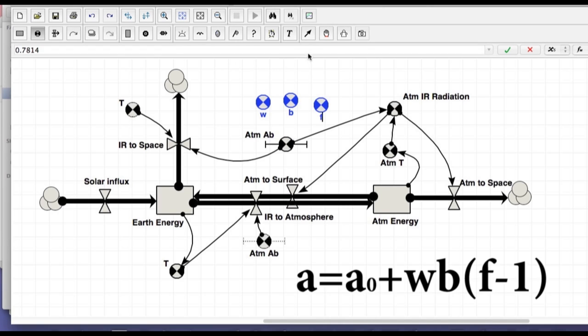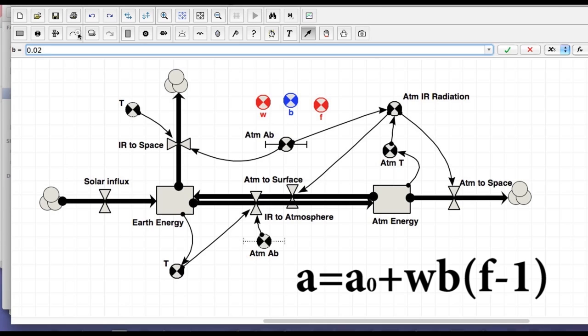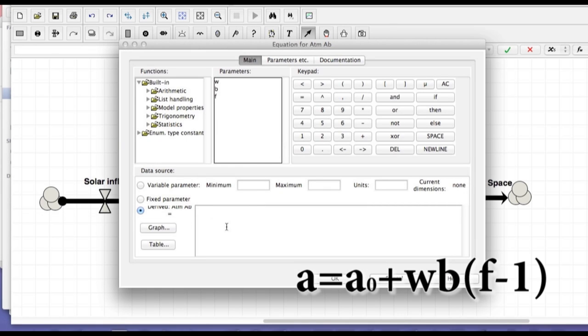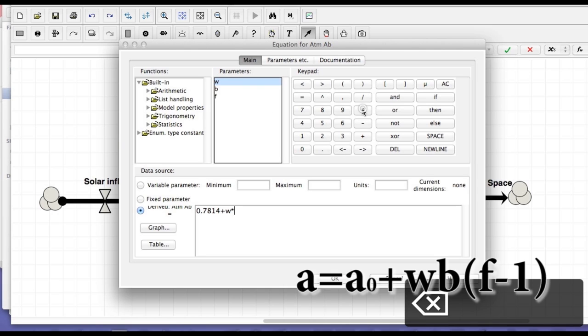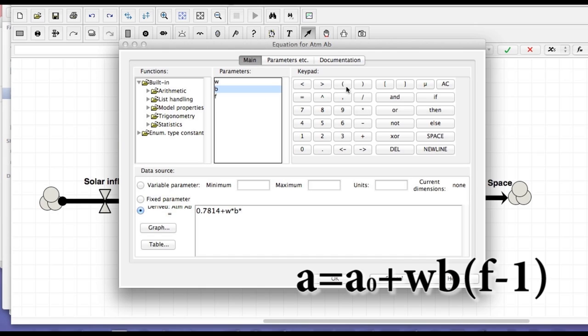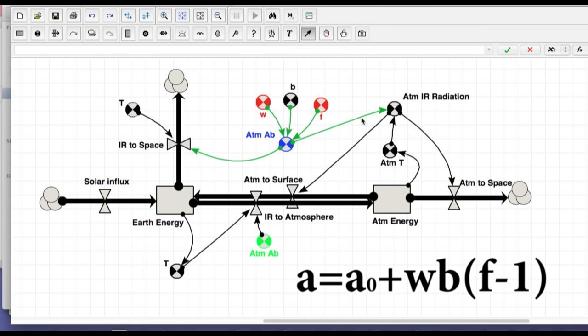All right now the B is a constant as we said so that's going to be the easiest to deal with. That's 0.02 which again we get from more sophisticated global circulation models. All of these need to go in. And all of our names should be out of the way. We still have a few things to define here. I've completely messed up my atmospheric absorption coefficient over here. It's no longer a variable parameter. It is actually derived and the formula as we said is going to be the original atmospheric absorption coefficient which we said was 0.7814 plus W times B times F-1.